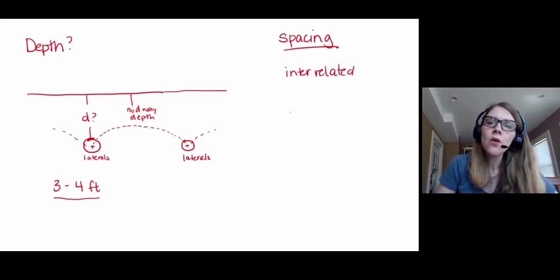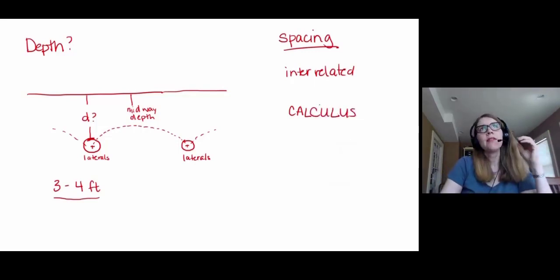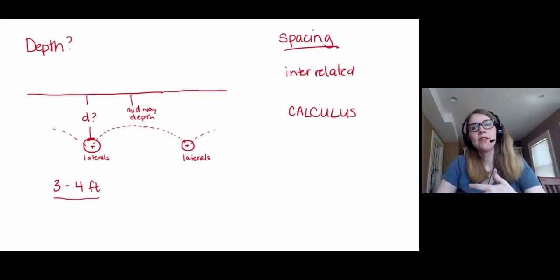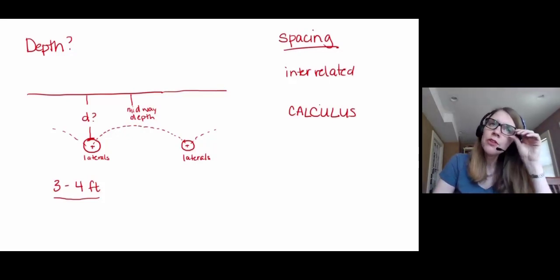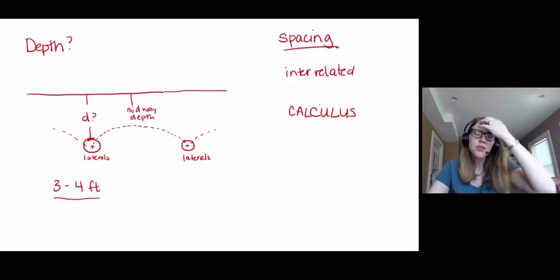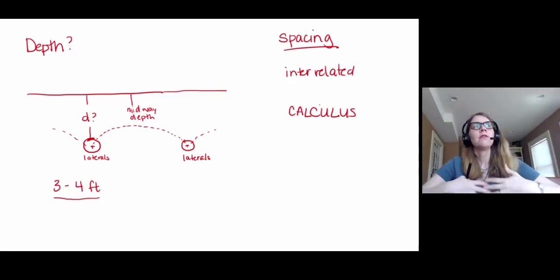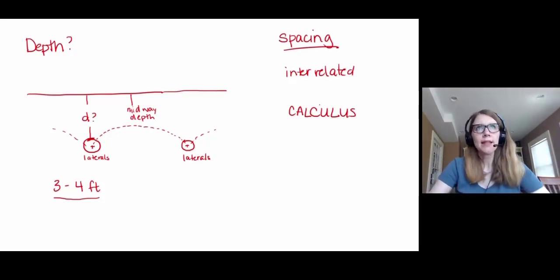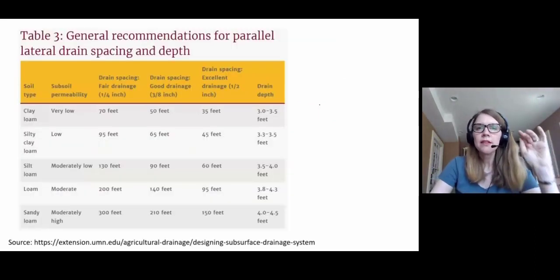So you can't think of depth and spacing as totally independent, that they are in fact interrelated. And there's actually a whole bunch of math that relates depth and spacing and effective amount of drainage. But it's all calculus-based, and most of the time people don't use it unless they are like a research engineer studying performance of subsurface drainage systems.